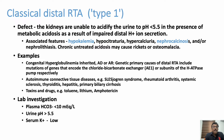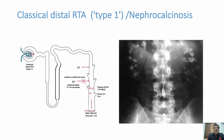In Type 1 RTA, bicarbonate is less than 10 mEq/L, urine pH is more than 5.5, and serum potassium is low. The most dangerous finding is the low serum potassium — some patients can progress to respiratory failure, and rarely to weakness. Nephrolithiasis and nephrocalcinosis are important findings; on X-ray you can see multiple calcium stones in the kidney and surrounding area — a very classical finding.